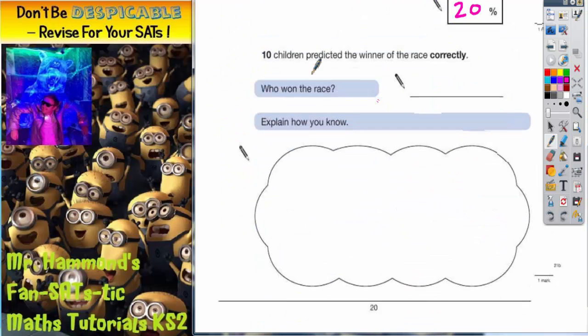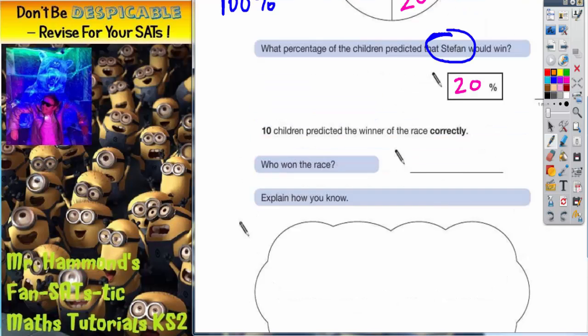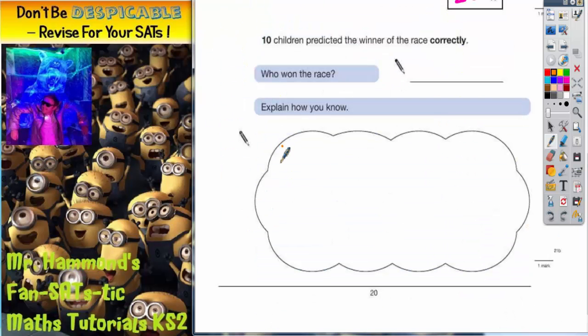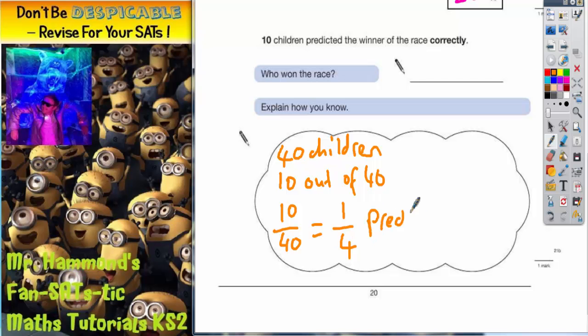Moving on, it says that 10 children predicted the winner of the race correctly. Who won the race? Well, if we go back to the start, we were told that 40 children were predicting who they thought was going to win. So we've got 40 children in total and 10 out of 40 predicting correctly. Now 10 out of 40 is the same as a quarter. So a quarter of the children predicted correctly.